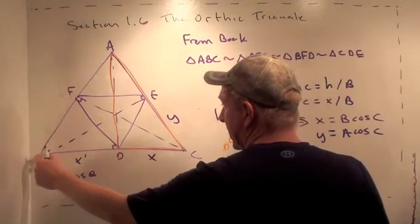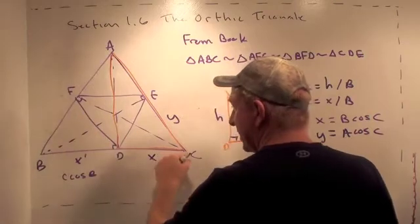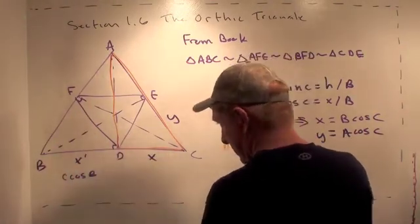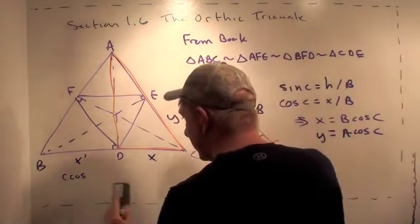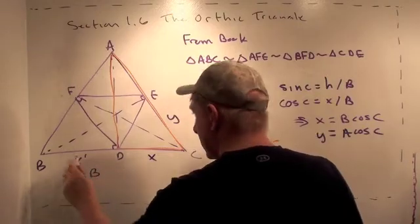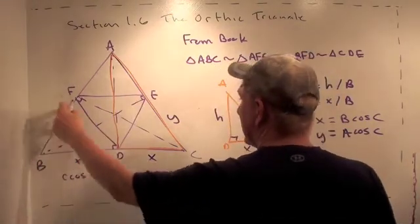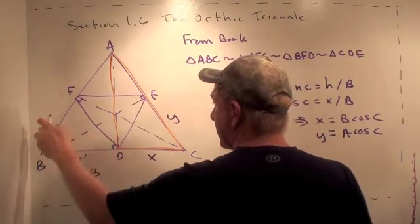And this side here, which we're going to get out of the triangle BFC, is going to be A cosine B.